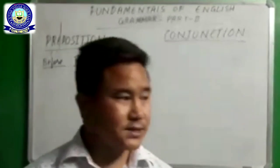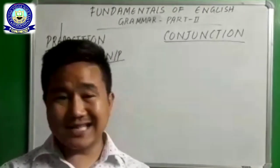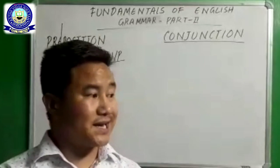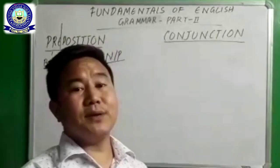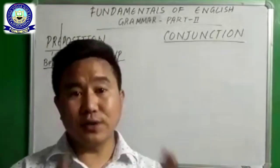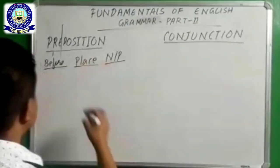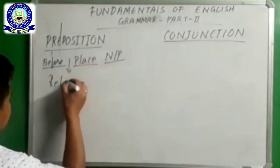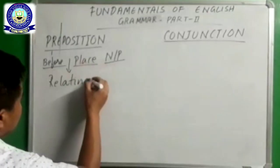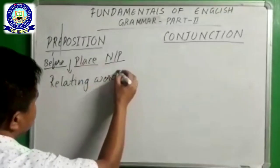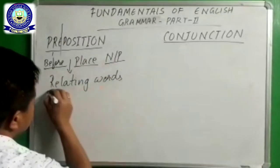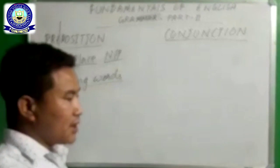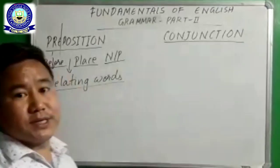As you have already studied, a preposition is a word that is placed before noun and pronoun and it shows the relation of noun and pronoun to other words in a sentence. In other words, prepositions are relating words — they relate noun and pronoun to other words in a sentence.